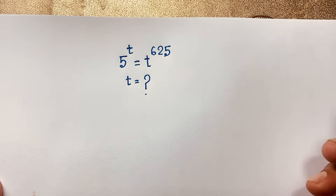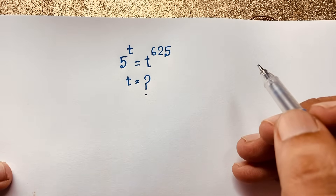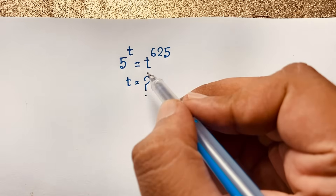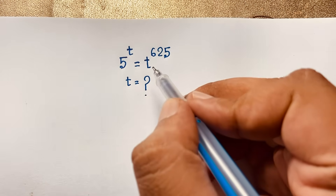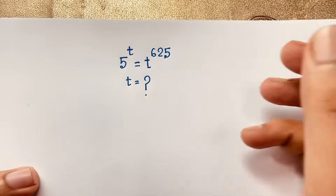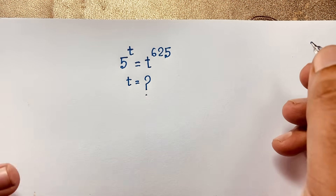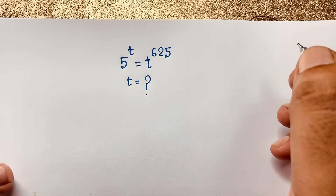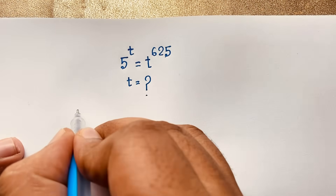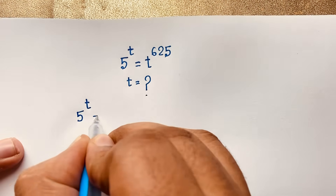Hello everyone, welcome to my YouTube channel. Today we have solved an interesting exponential math problem: 5 to the power x is equal to x to the power 625. Find x. How to solve this interesting math problem? I solved this question using an easy method.